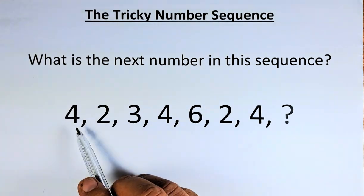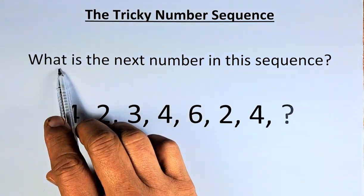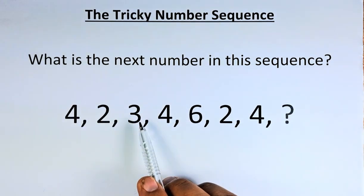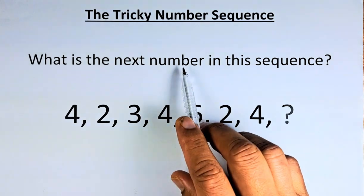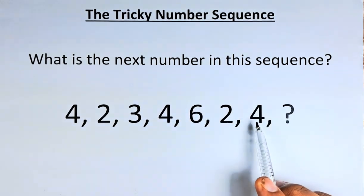If you look at number 4, there are 4 letters in the word 'what'. 1, 2, 3, 4. So 'what' has 4 letters. 'Is' has 2. 'The' has 3 letters. 'Next' is 4. 'Number' is 6. 'In' is 2. 'This' is 4.